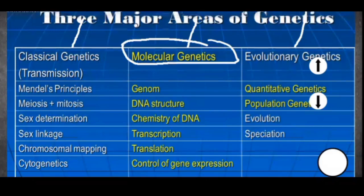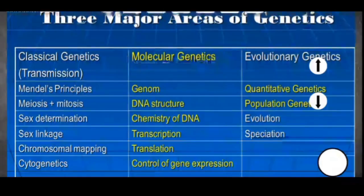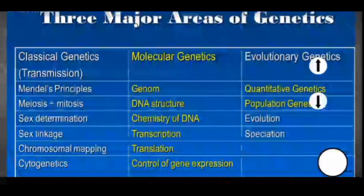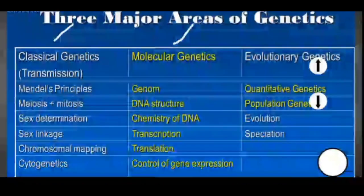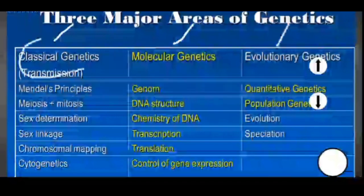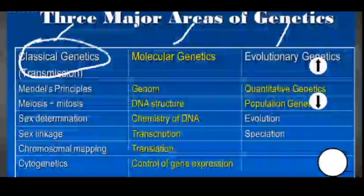Welcome to this introductory video on genetics. We're going to be looking at the three major fields of genetics. Genetics is divided into three major areas of study: first, classical genetics, followed by molecular genetics, and then evolutionary genetics. Starting right away with classical genetics — when you hear of classical genetics, it talks of the genetics of crosses.